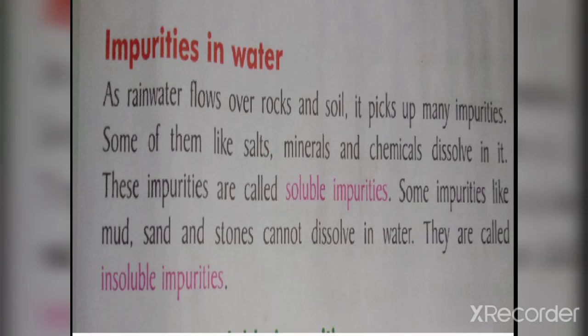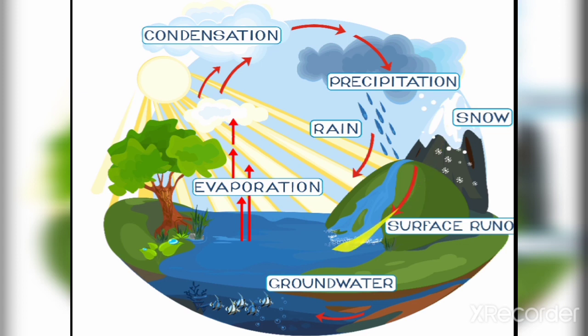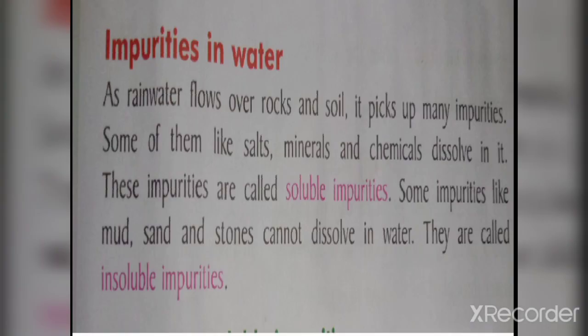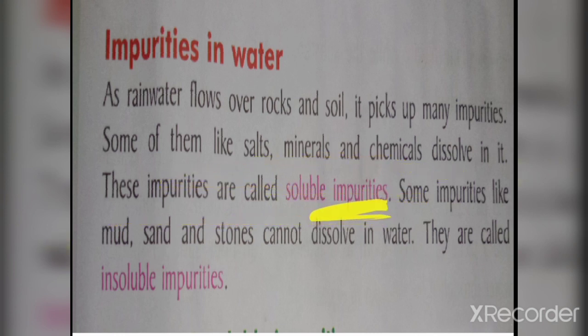Now, impurities in water. Water has impurities. As rainwater flows over rocks and rivers, it picks up many impurities. Salts and minerals that dissolve in it are called soluble impurities. Some impurities like mud, sand and stones cannot dissolve in water — they are called insoluble impurities.